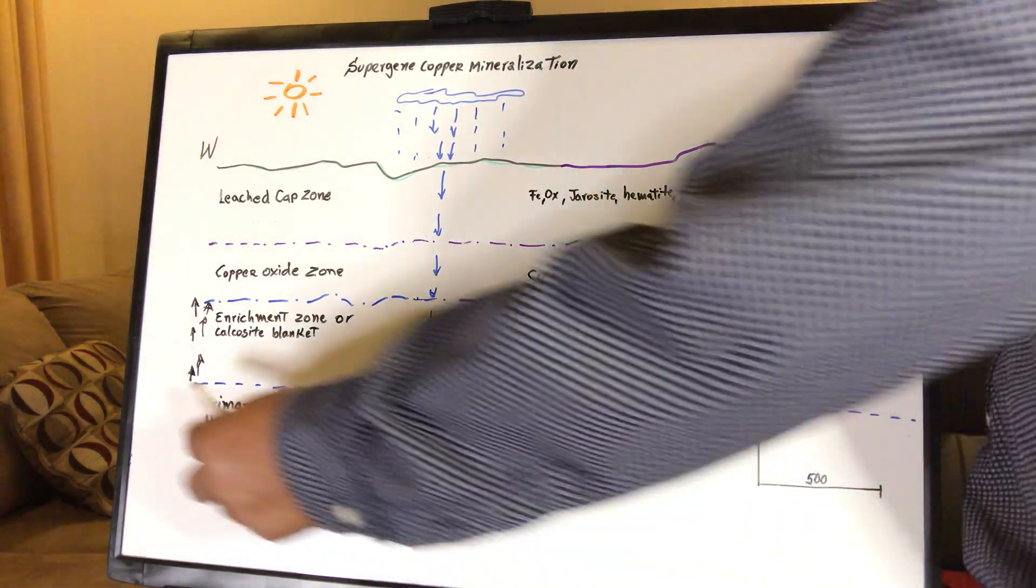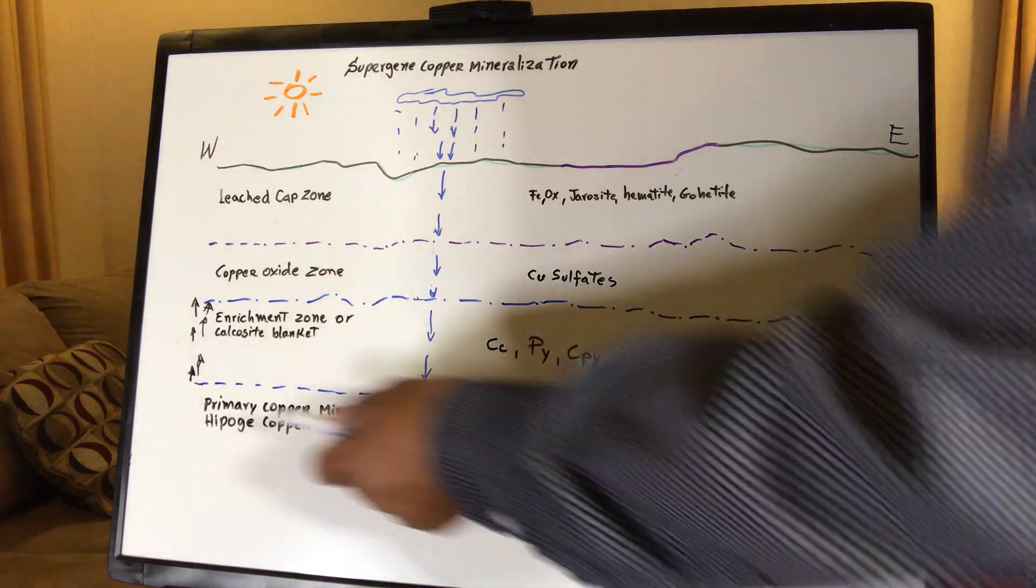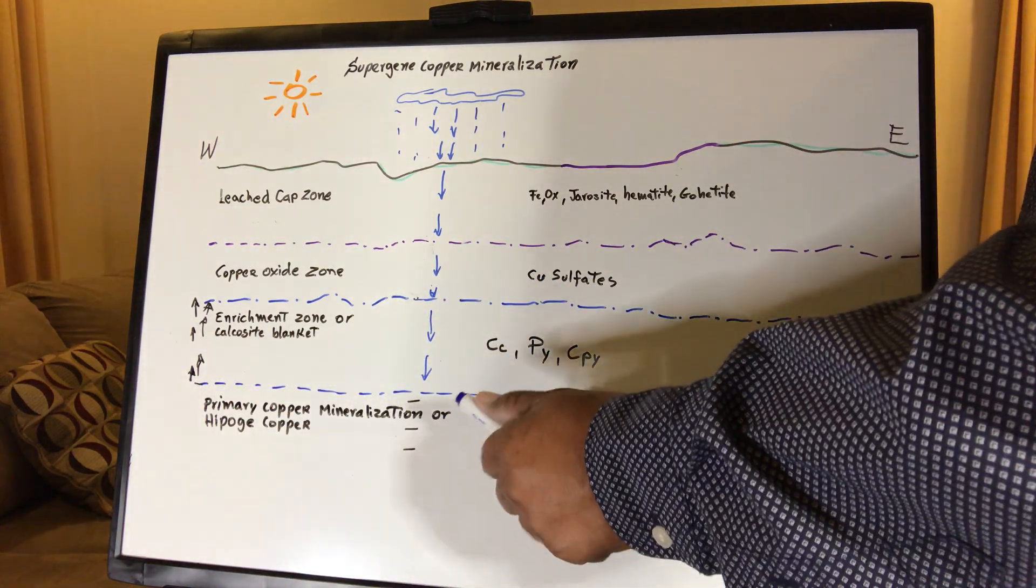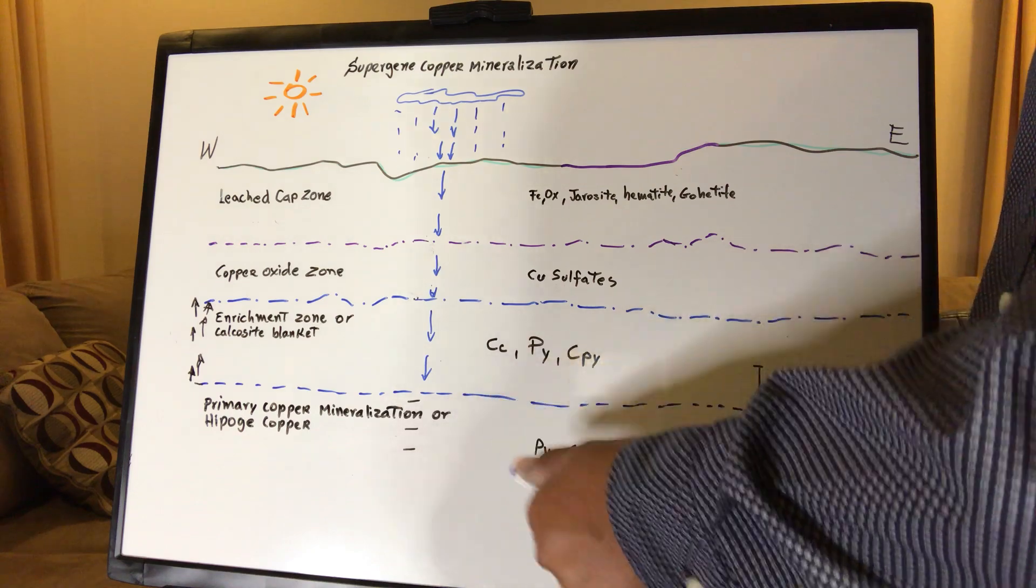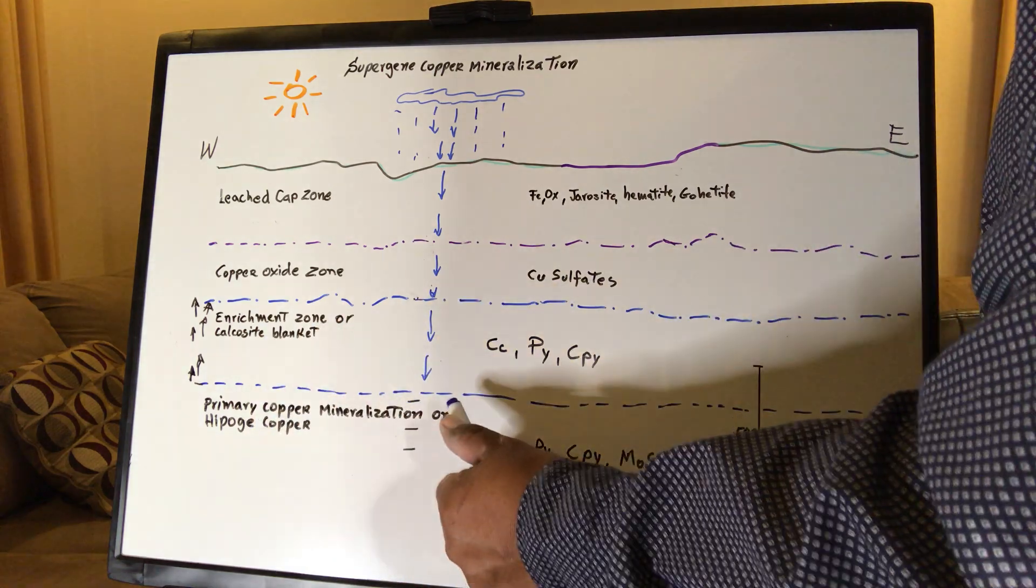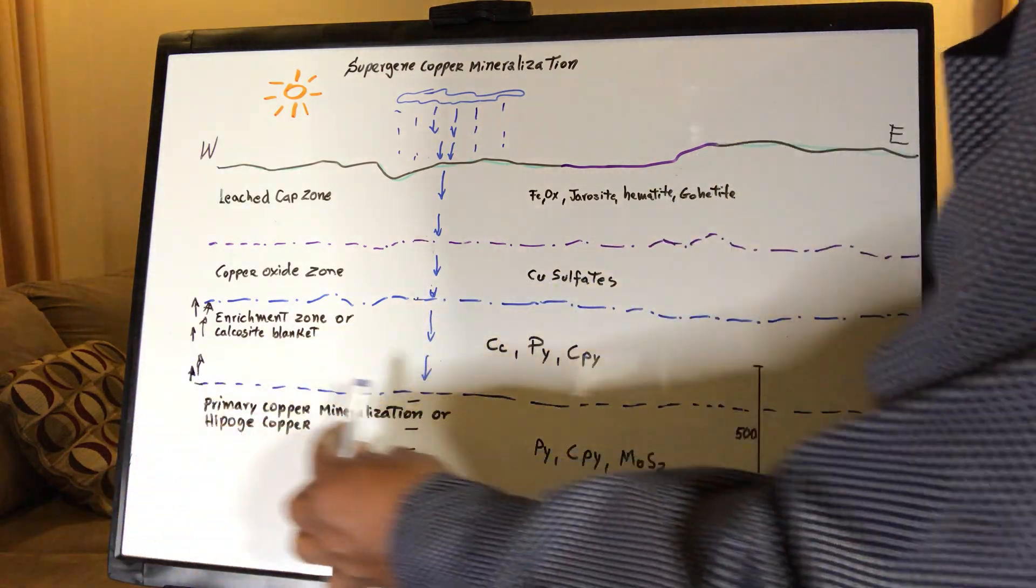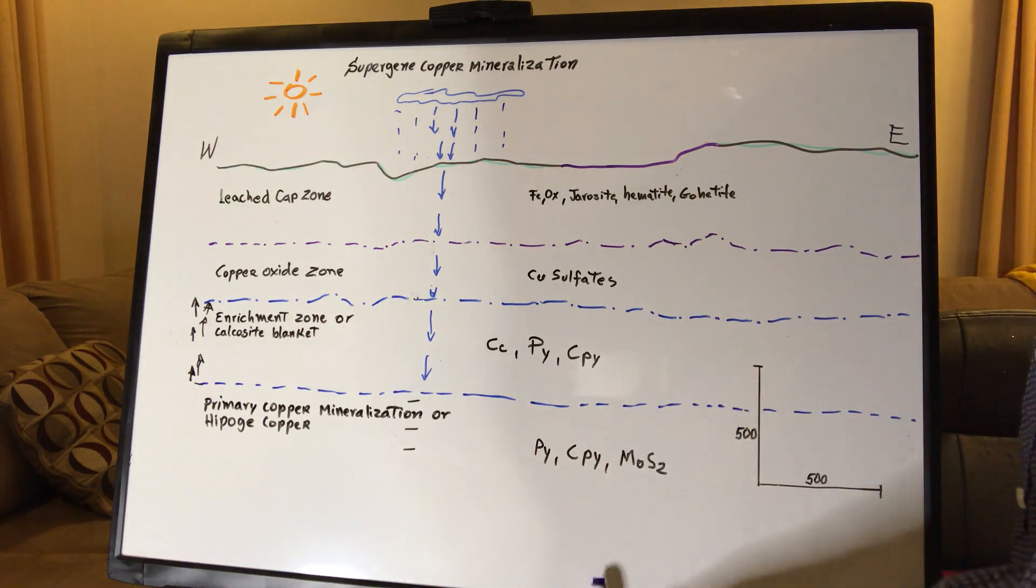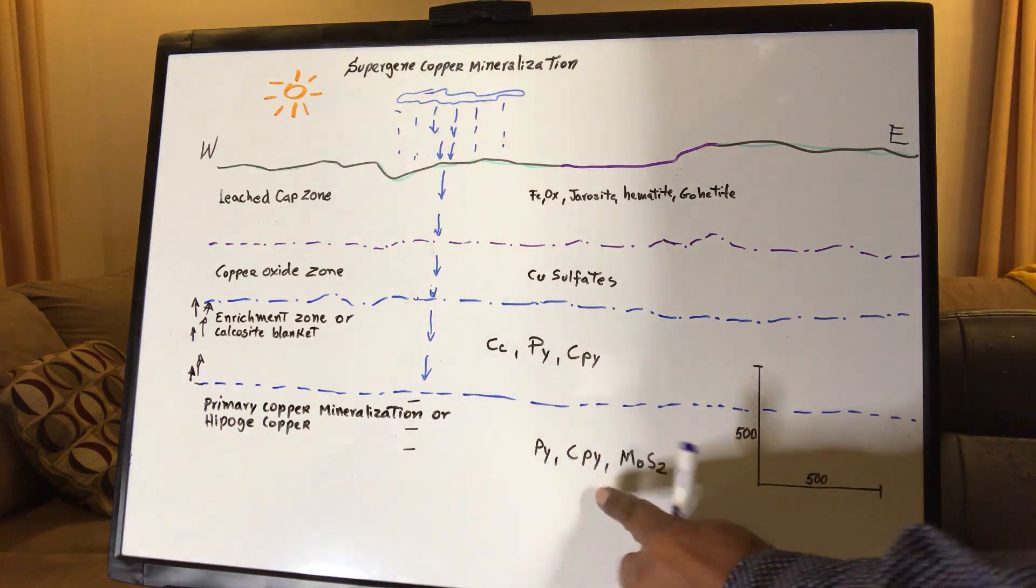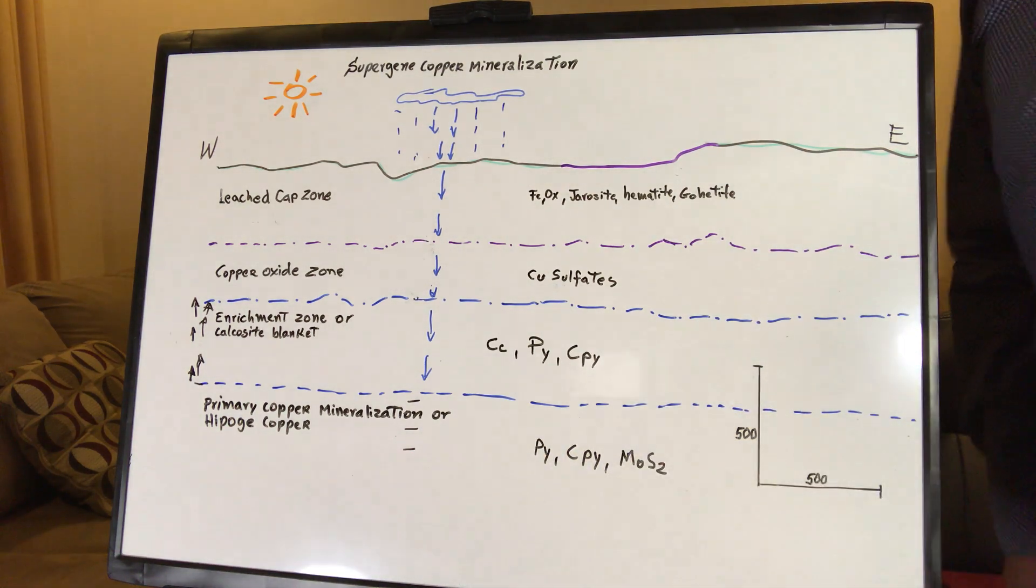So finally, we have this line. But what is this line? This line is the limit of the underground water. Or water table, or water, at the beginning of the rain season. So this is the bottom, bottom. It cannot go lower. So if it does not go lower. So all the primary minerals, pyrite, chalcopyrite, and molybdenite, will be there.